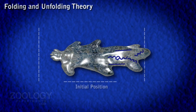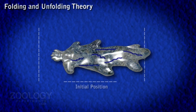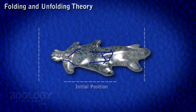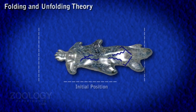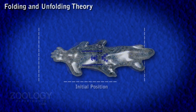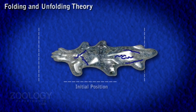When amoeba progresses, the cortical plasma gel at the posterior end contracts. It is then liquefied to form plasma sol, which is forced through the central endoplasm to flow forward. At the anterior end, the plasma sol is converted back into plasma gel — that is unfolding — which forms the advancing pseudopodium.